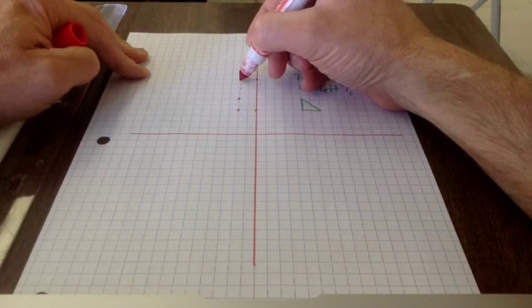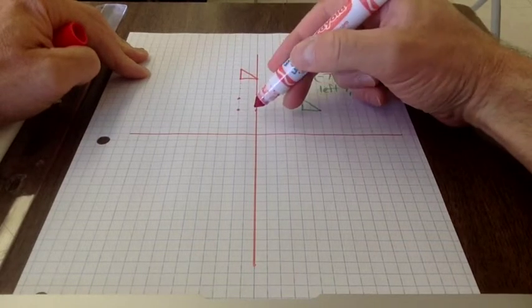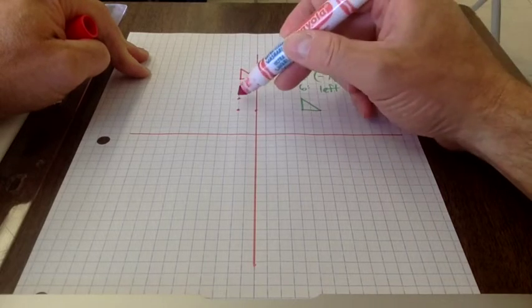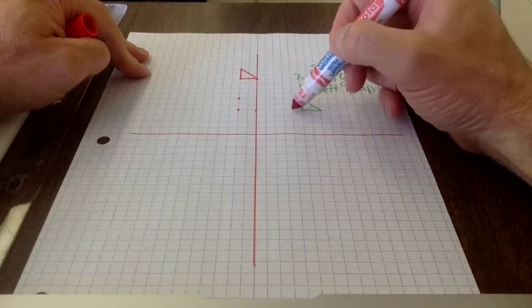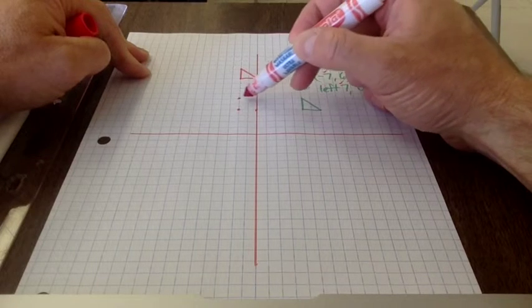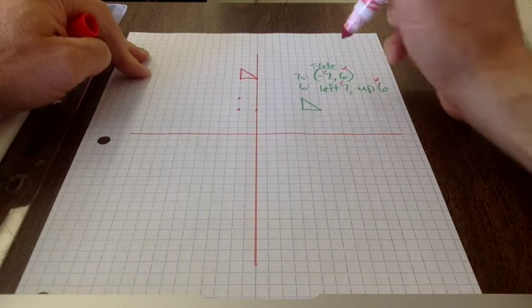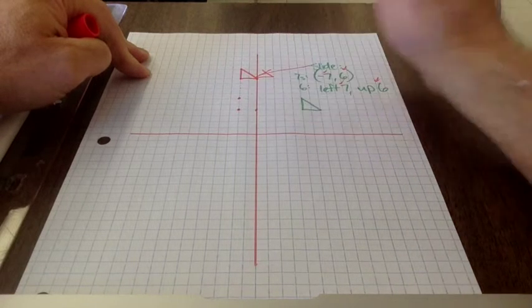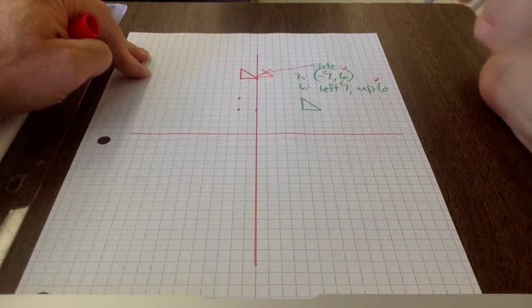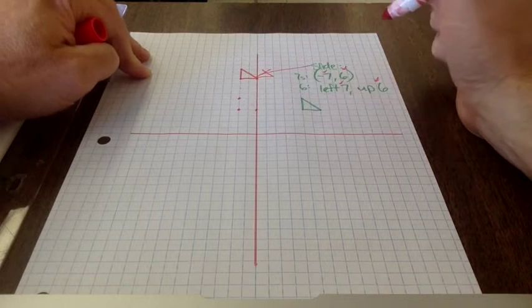I could, for example, do both of the lefting and the upping all at once. Instead of having this intermediary step, I could just go one, two, three, four, five, six, seven, one, two, three, four, five, six, one, two, three, four, five, six, seven, one, two, three, four, five, six, etc. Okay, and that is perfectly legitimate. That's, in many ways, that's the easiest way to go. Just seven and six.